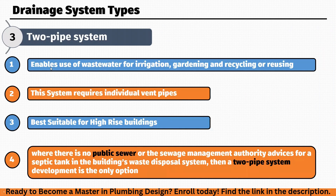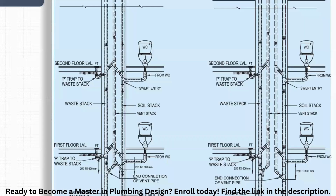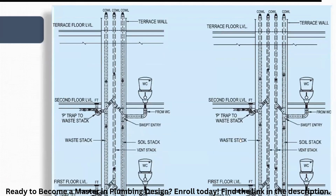This system enables the use of wastewater for irrigation, gardening, and recycling. There are separate pipes: the waste from toilet fixtures is connected to the soil stack, whereas from non-toilet fixtures like lavatories, kitchen sinks, and all other non-toilet fixtures, the waste is connected to the waste stack. So there are two stacks — one for the soil and one for the waste.